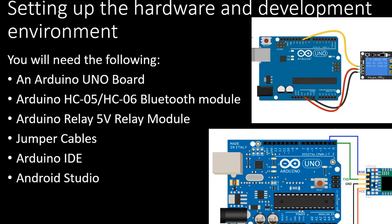If you want to get into Android development along with Arduino development and use Bluetooth communication for this project, you'll need the following: an Arduino Uno development board, an HC-05 or HC-06 Bluetooth module, an Arduino 5-volt relay module, jumper cables, the Arduino IDE, and Android Studio. Note that Android Studio is very resource intensive — you'll need at least 4GB of RAM and a good Intel i5 or i7 CPU to run it.